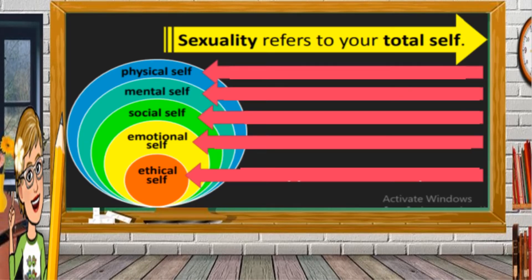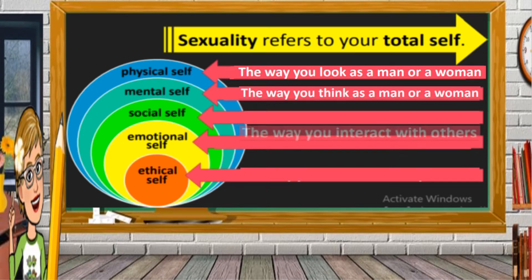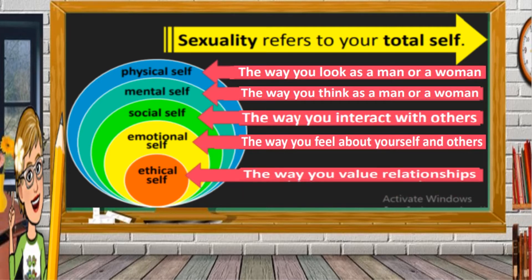Sexuality refers to your total self: your physical self — the way you look as a man or a woman; your mental self — the way you think as a man or a woman; your social self — the way you interact with others; your emotional self — the way you feel about yourself and others; and your ethical self — the way you value your relationships.